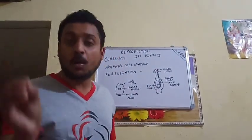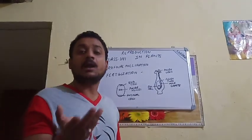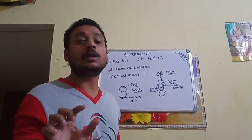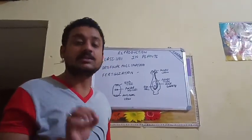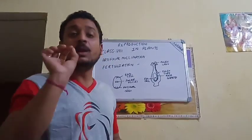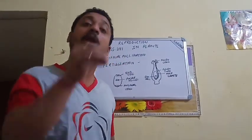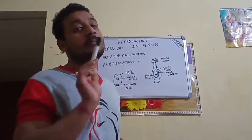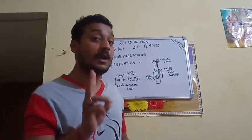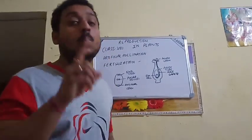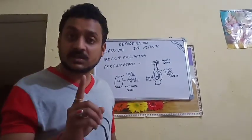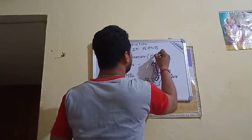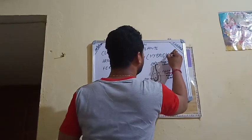The pollen grain will be collected from the male plant's male flower and it will be given to the female plant's female flower. The male plant is disease resistant and the female plant is high yielding variety. So the progeny that will come out will have both disease resistance as well as high yielding variety. This is also known as hybridization.